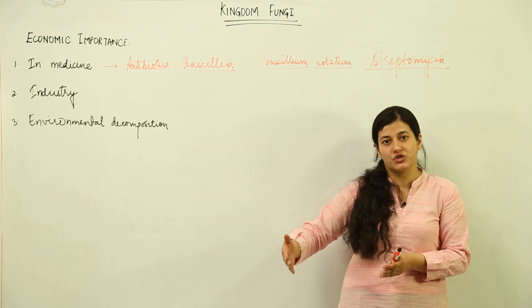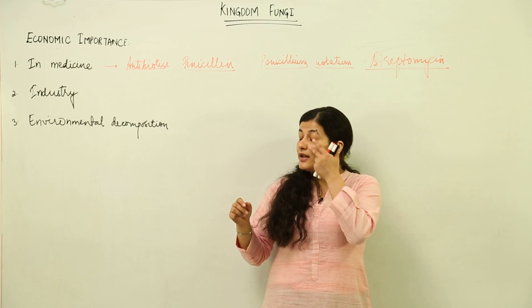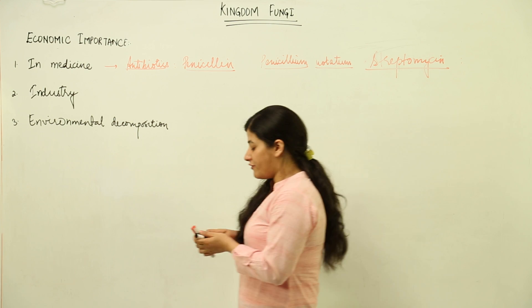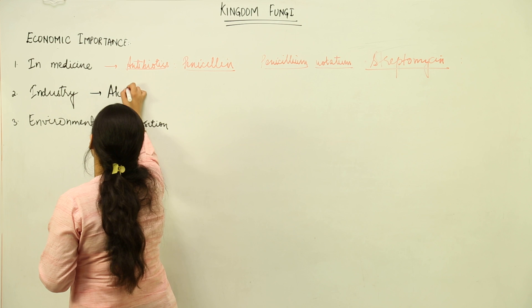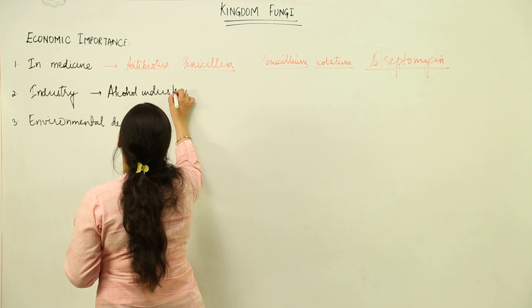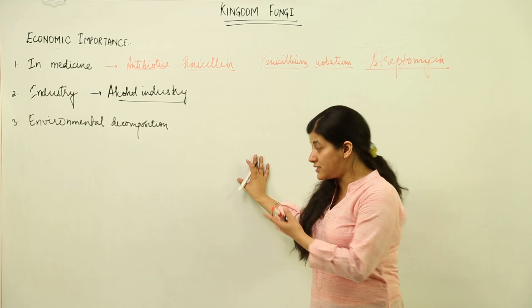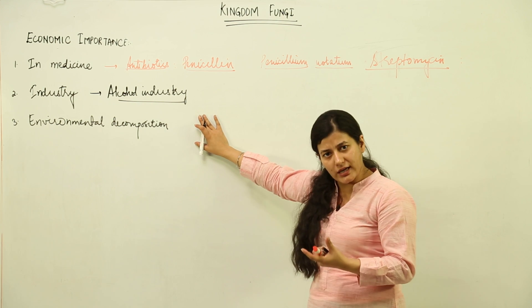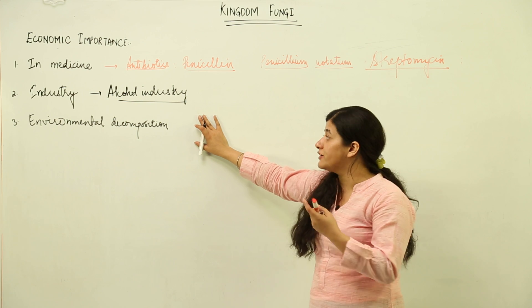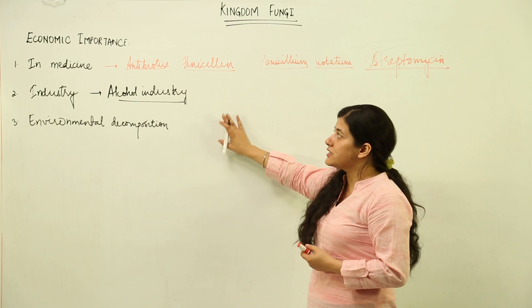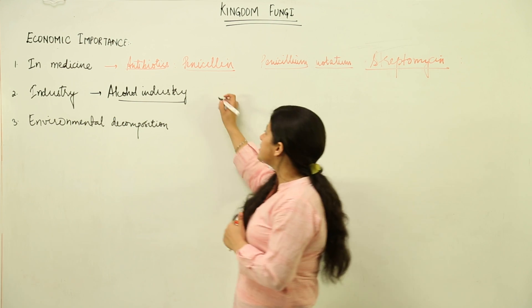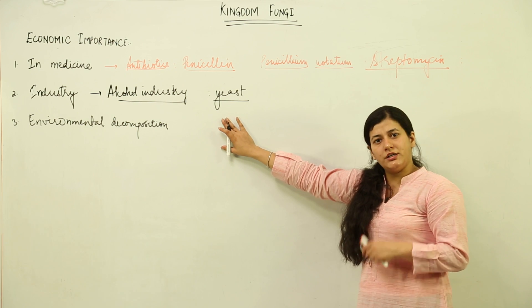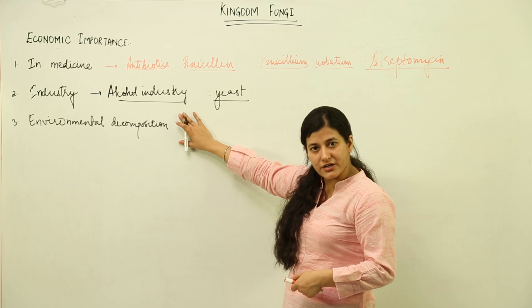Where fungi are beneficial for a farmer, at the same time they cause many diseases. Now the next field of economic importance is industry — first of all the alcohol industry. A huge industry generates a lot of revenue, and there are many drugs which use alcohol as their basis, along with cosmetics and other chemicals. Alcohol is formed as a result of fermentation brought about by yeast. Alcoholic fermentation by yeast is responsible for production of ethanol, which runs many industries.